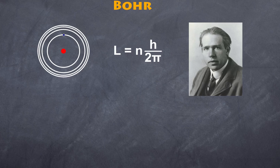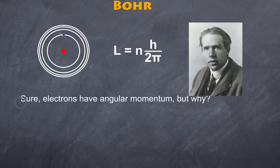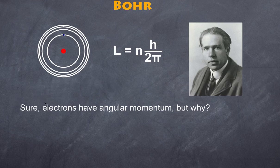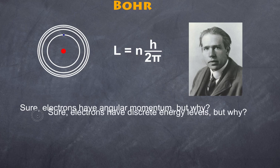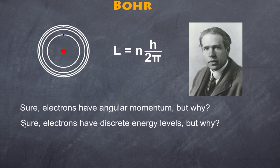But before we start we need to quickly review Niels Bohr. If you remember, Niels Bohr developed a planetary model of the atom where the electrons are in specific discrete orbits and those orbits are quantized. He stated that because they have angular momentum, but the questions are asked firstly: why do they have angular momentum?